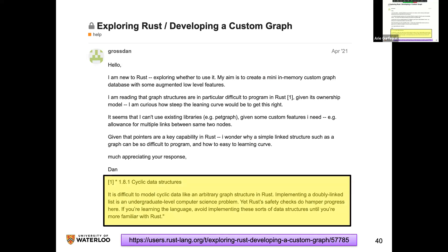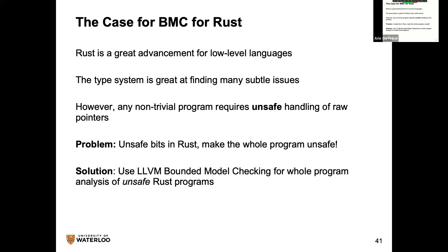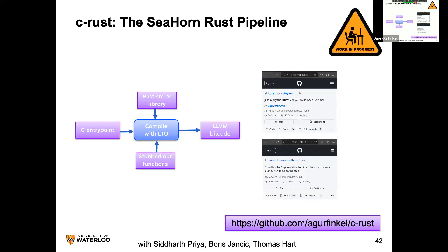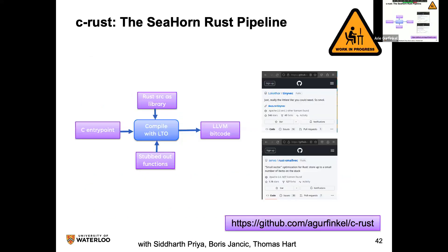So that gets back to: let's build BMC for Rust. If there are unsafe components and nobody knows what happens to them, that's exactly what we want to analyze. We live in LLVM, so over the summer we built a pipeline from Rust into LLVM bitcode and then into SeaHorn. It sort of works. Rust is already built on top of LLVM, so we just tap into that infrastructure and extract the bitcode.